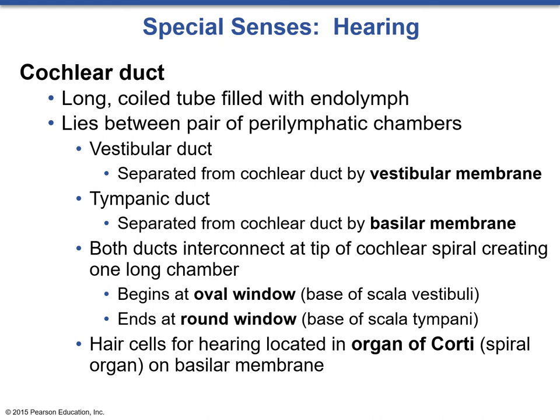The vestibular duct is separated from the cochlear duct by the vestibular membrane. The tympanic duct is separated from the cochlear duct by the basilar membrane. Both ducts interconnect at the tip of the cochlear spiral, creating one long chamber beginning at the oval window — the scala vestibulae — and ending at the round window, the base of the scala tympani. The hair cells for hearing are located inside the organ of corti, the spiral organ, on the basilar membrane inside the cochlear duct.